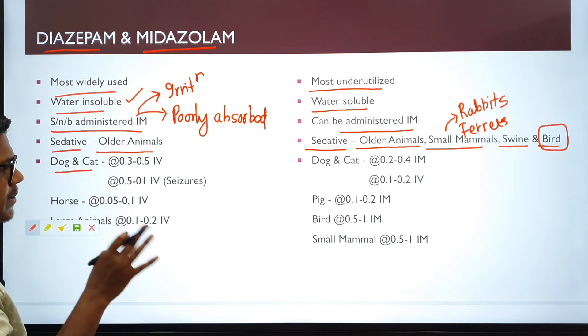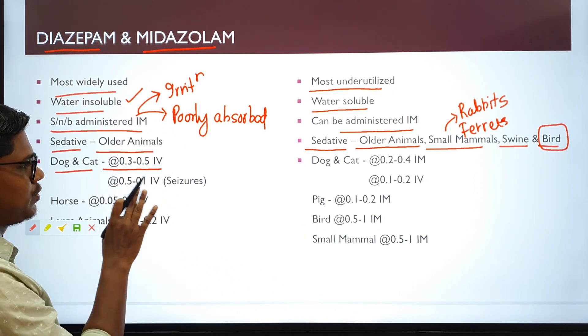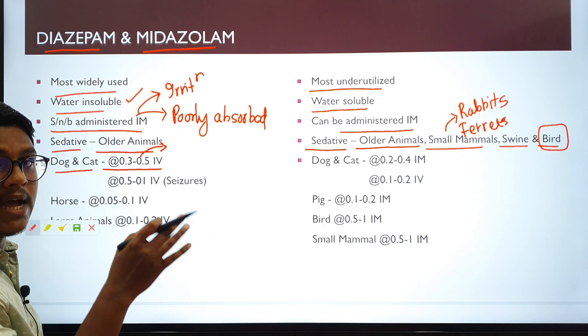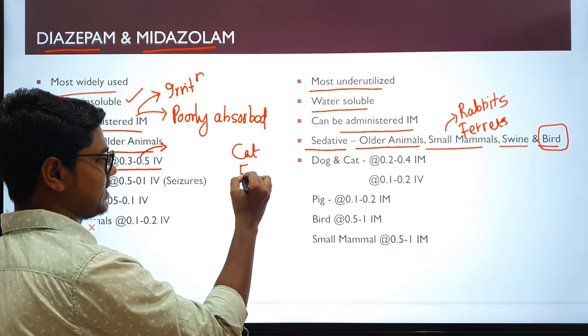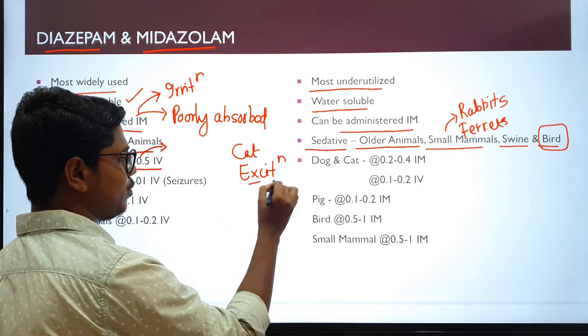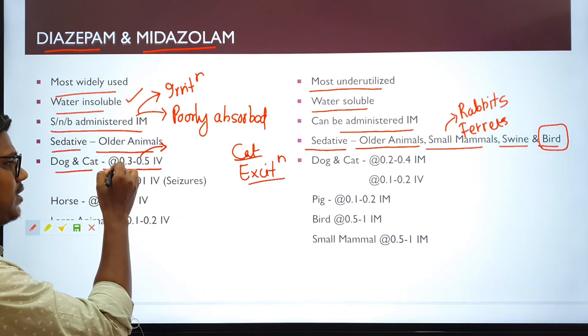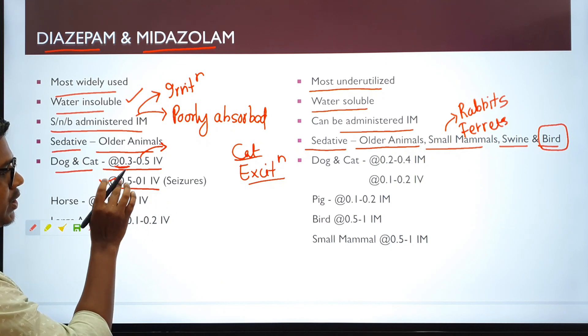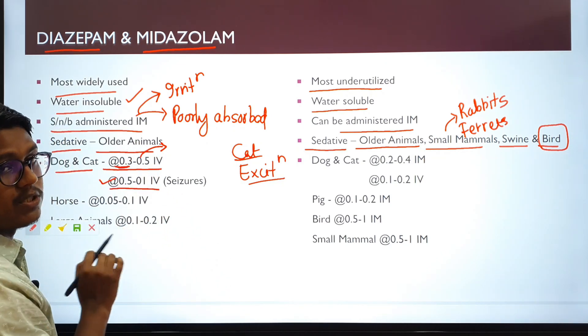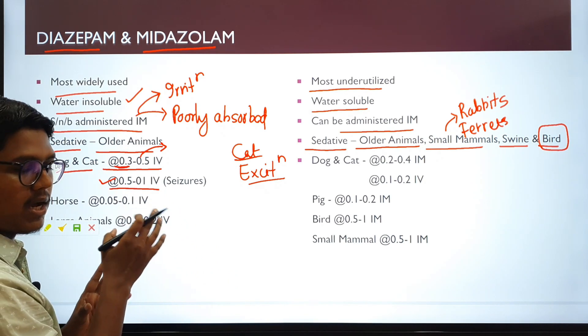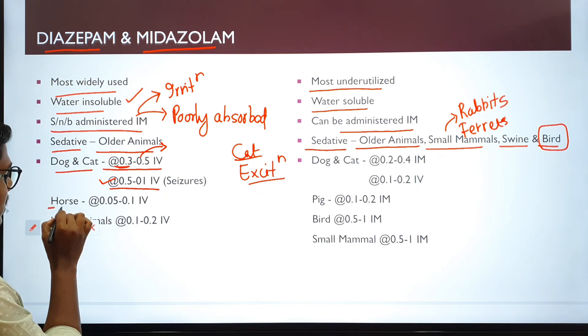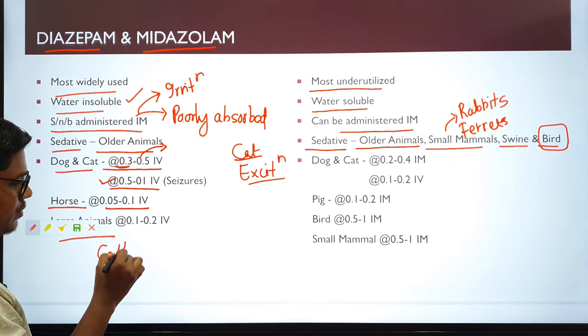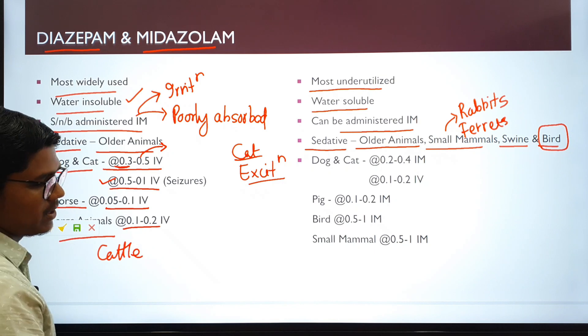Now, coming to the dose rate. In case of dog and cat, the pre-anesthetic dose rate is 0.3 to 0.5 mg per kg body weight. Remember, when you go for the higher dose rate, 0.5 mg per kg body weight, especially in dog and cat and more importantly in cat, they can cause excitation. So it should be used cautiously in case of cats or use the lower margin. If you are using for seizures or status epilepticus, then you have to use at the dose rate of 0.5 to 1 mg per kg body weight intravenously. Diazepam is used intravenously because they are water insoluble and poorly absorbed from intramuscular sites. In case of horse, you can use 0.05 to 0.1 mg per kg body weight intravenously. Large animals, that is cattle, you can use 0.1 to 0.2 mg per kg body weight intravenously.